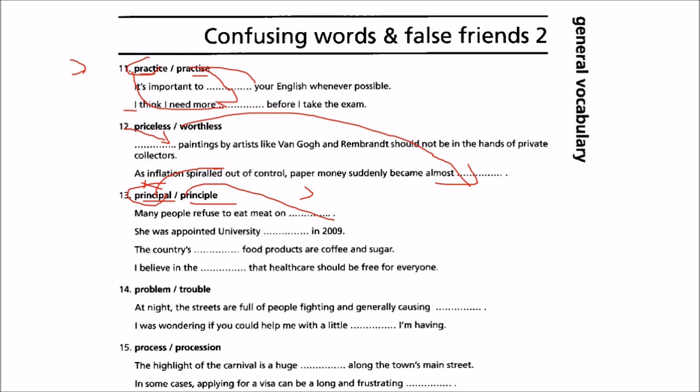The country's principal food products are coffee and sugar — again 'principal', meaning the main. So 'principal' is the head of a school or college, or it means 'main'. I believe in the principle that healthcare should be free for everyone — 'principle' here means a belief or idea.